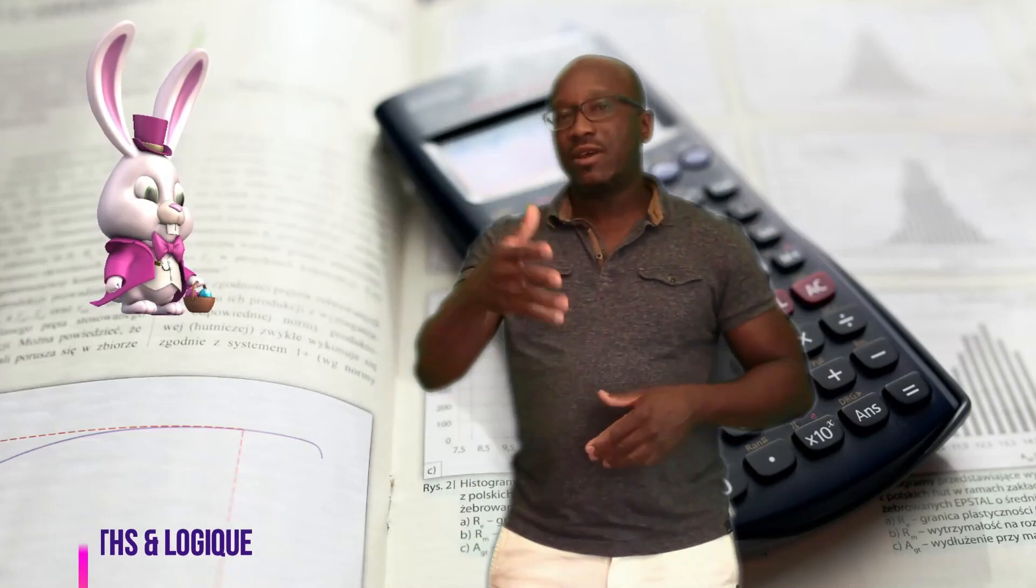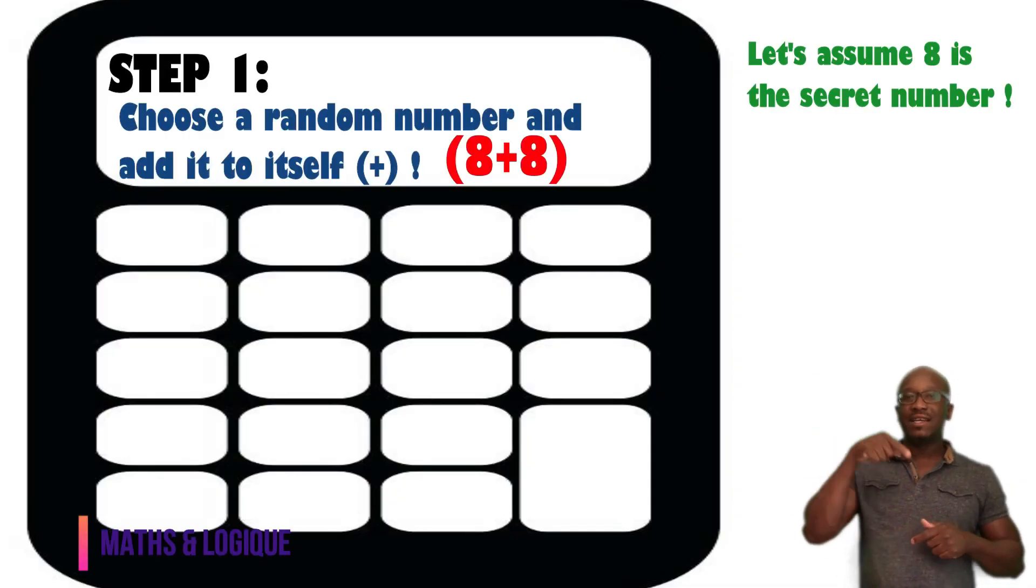What you have to do is tell one of your friends to take a calculator. You will tell him to think about any number. It can be anyone. It can be a negative number, a positive number, an integer, or a decimal number. Any number. Now you will tell your friend to take his calculator and do some calculations.